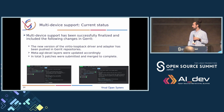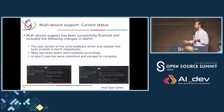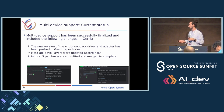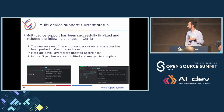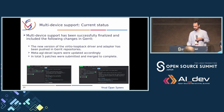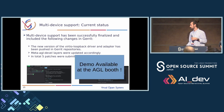The current status of the multi-device activity: it is being finalized, and the new versions of the driver and the adapter have been pushed to Gerrit. All corresponding changes to the meta-AGL layer have been updated accordingly. In total, we have five patches. The demo corresponding to the previous slides can be shown outside at the AGL booth.